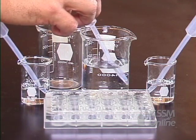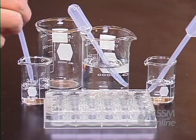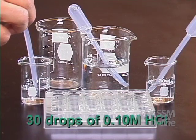In well 1 of the first row, place 30 drops of 0.1 molar HCl.